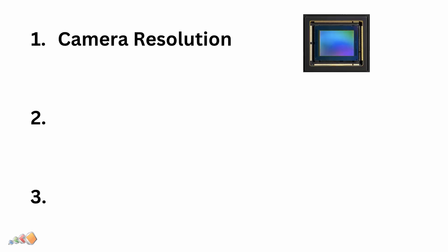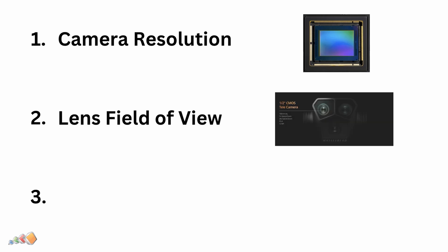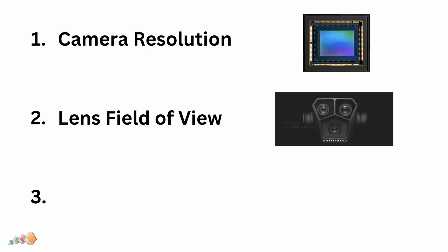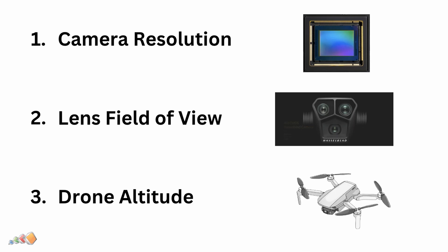First, camera resolution: a higher resolution camera has more pixels and captures more detail, thereby lowering the GSD. Second, the type of lens and its field of view also influences GSD by affecting how much ground area is captured in a single image — a longer lens captures more detail from a higher altitude, whereas a fisheye lens might capture a much wider area. Third, the altitude of the drone: the lower you fly, the more detail will be in your pictures and the lower your GSD score will be.